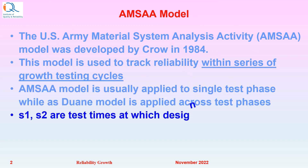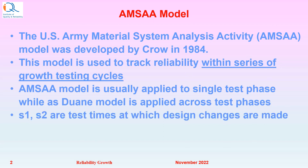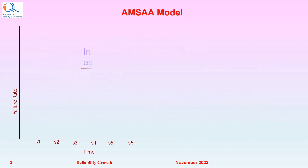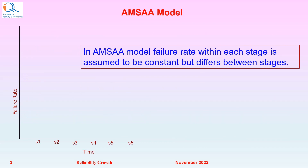Suppose S1 and S2 are test times at which design changes are made. In the AMSA model, the failure rate within each stage is assumed to be constant, but differs between stages. So the failure rate is lambda 1 for stage 1, then it reduces to lambda 2 because of improvement actions. Then for stage 3 it reduces to lambda 3, and so on.